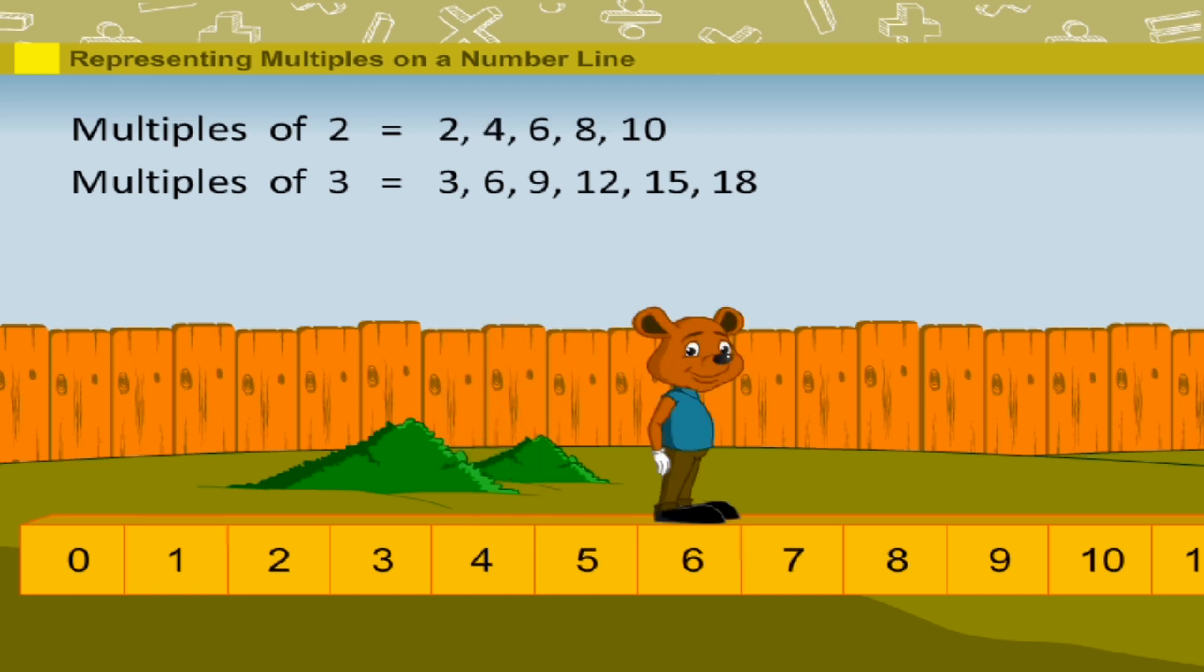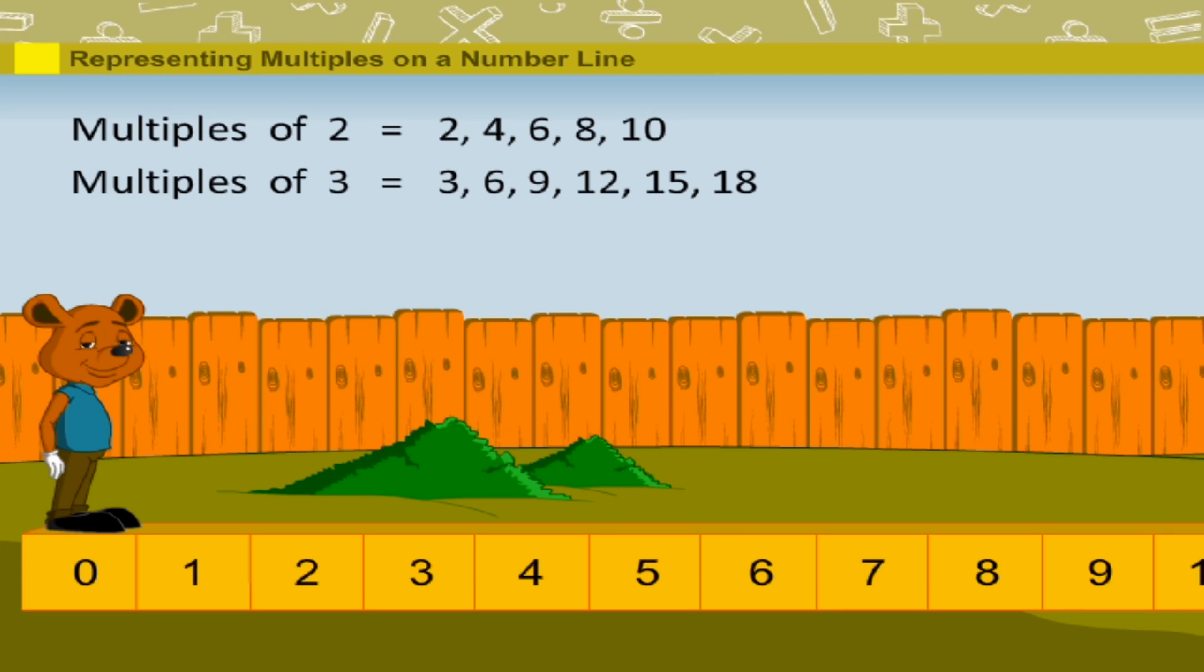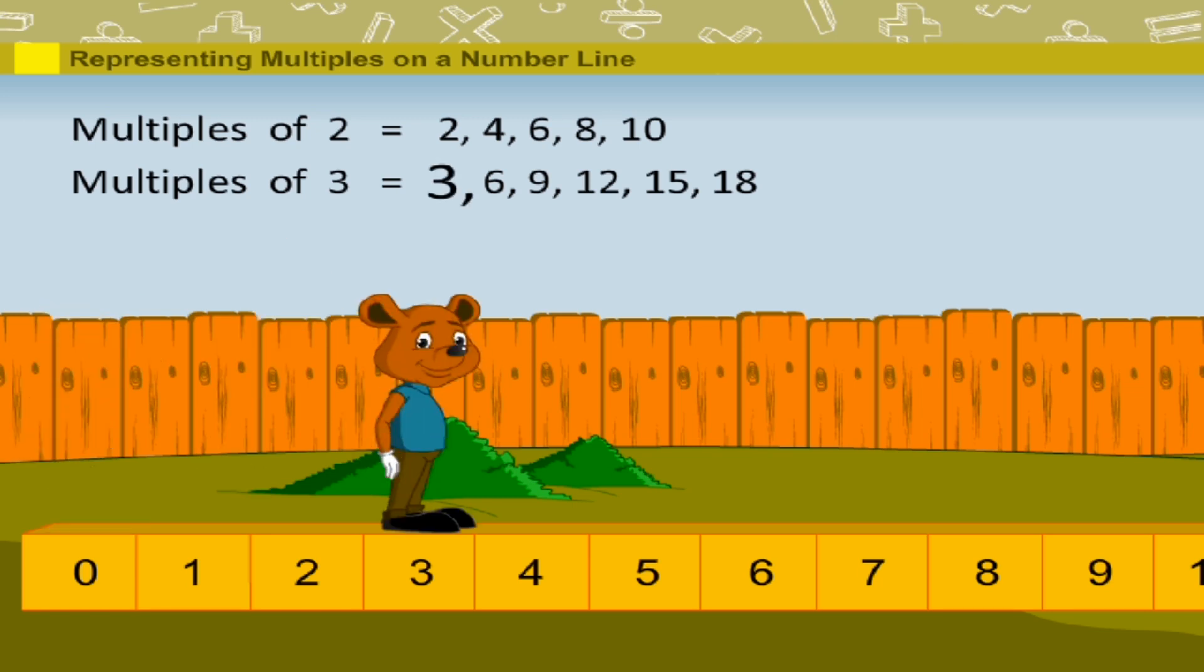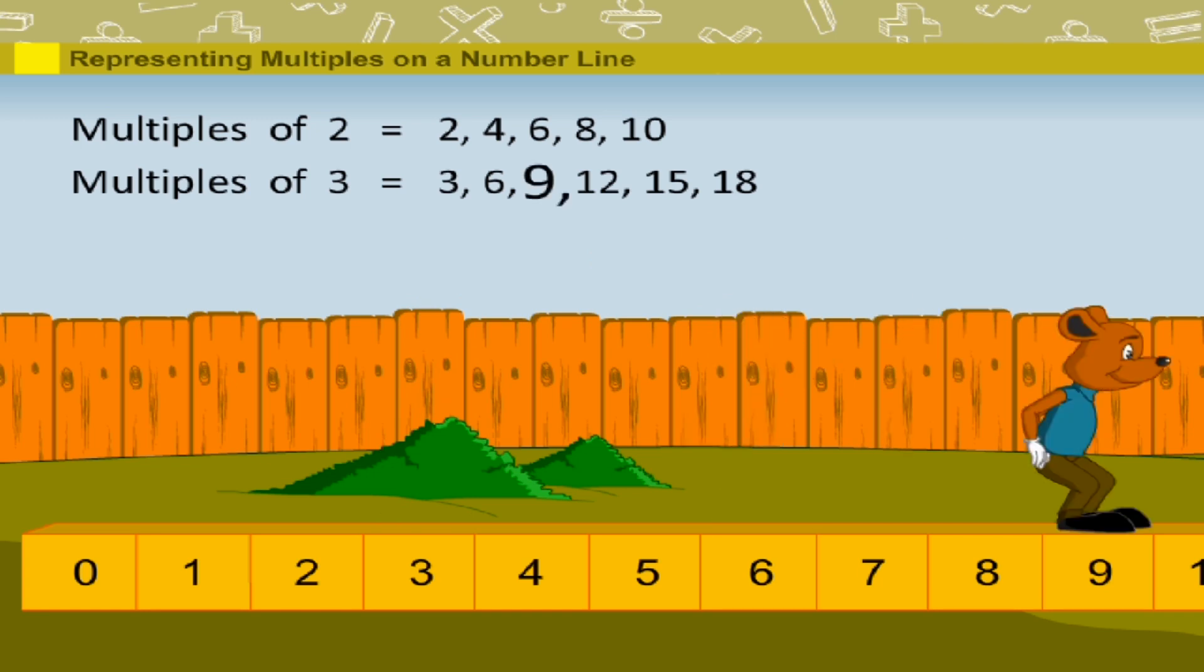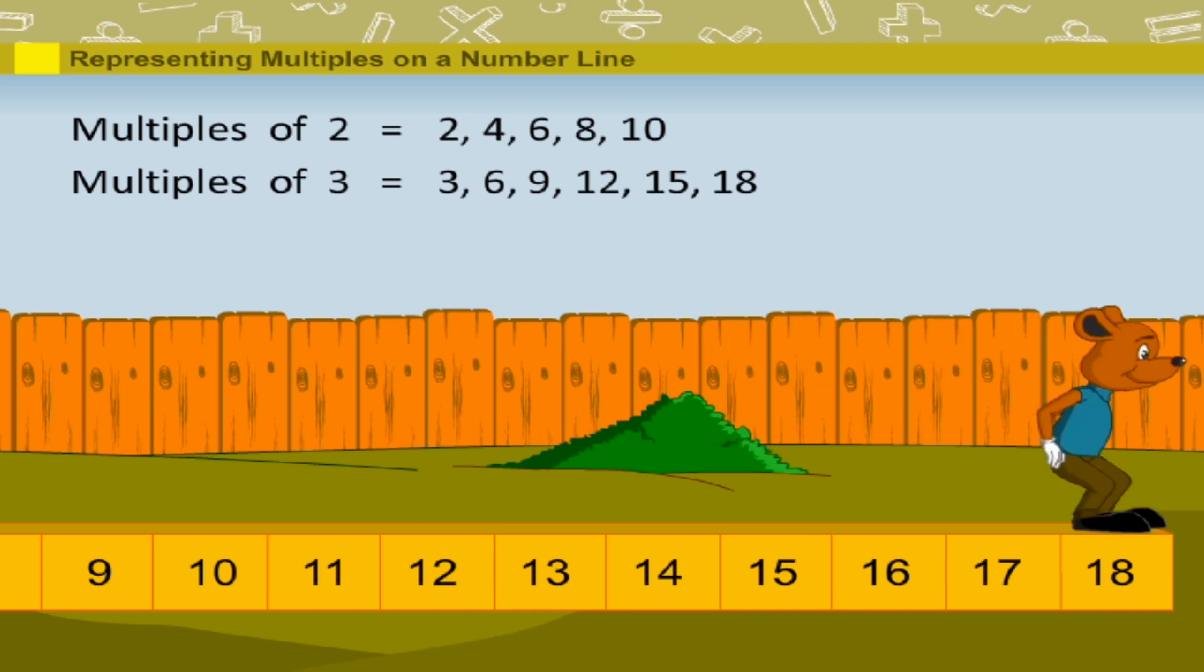Next, Robbie jumps to six and then to eight and to ten. Then Robbie decides to jump again, but this time he jumps three places at a time. So here he goes to three and on to six and then to nine and then to twelve, on to fifteen and finally to eighteen.